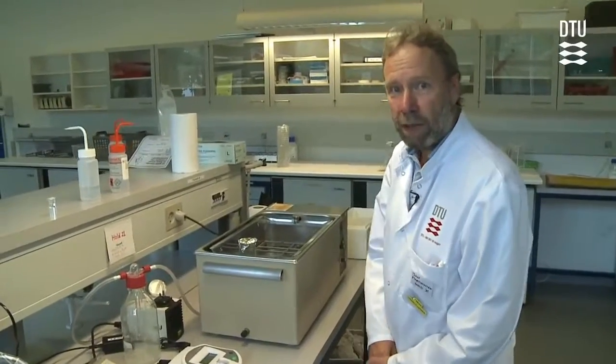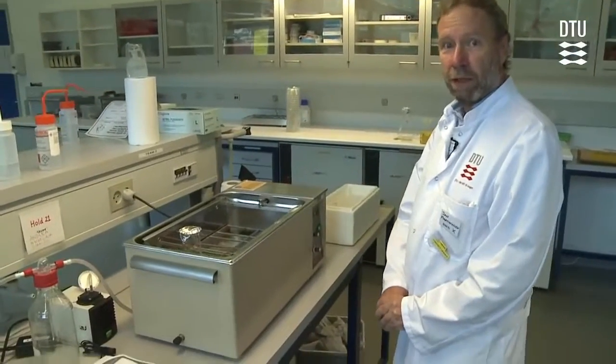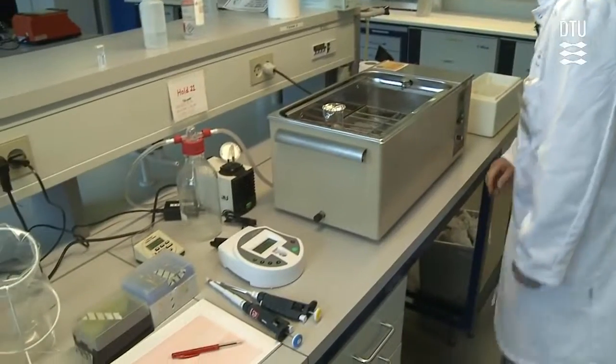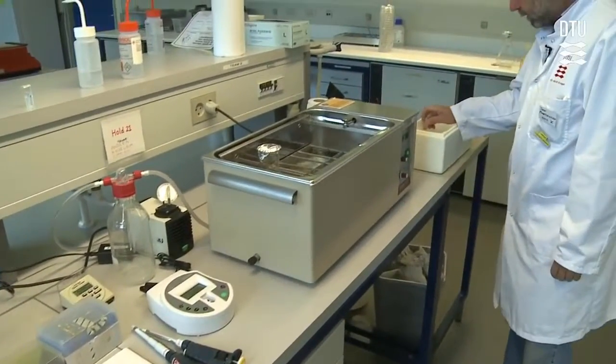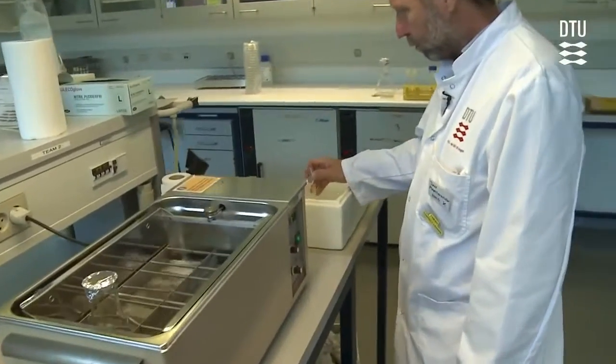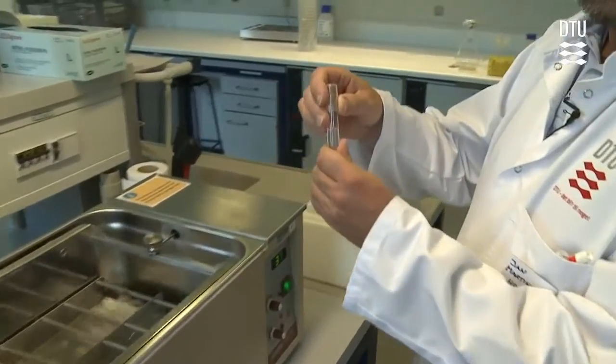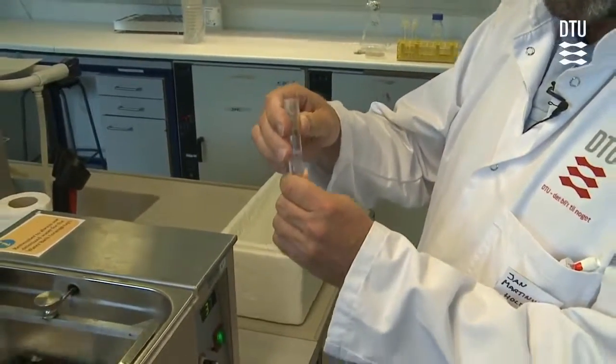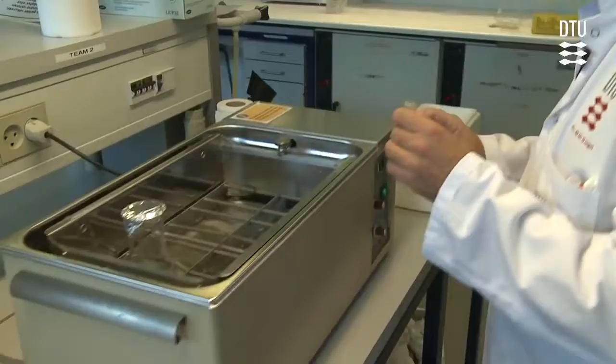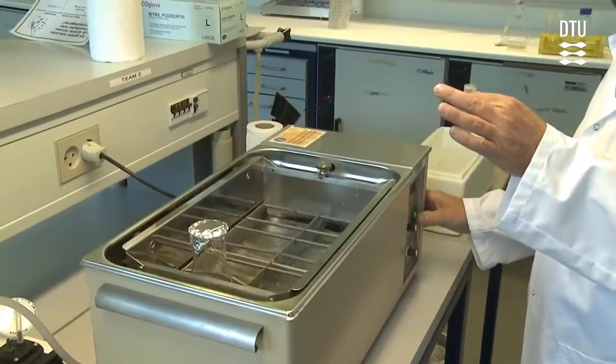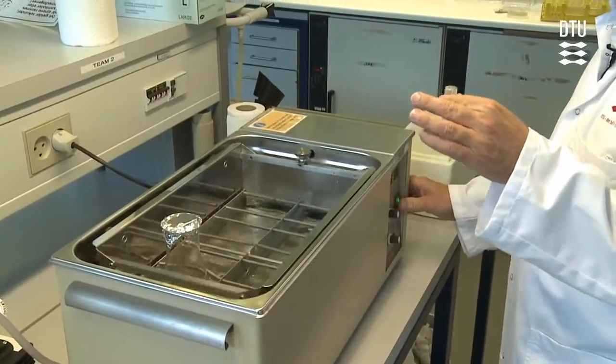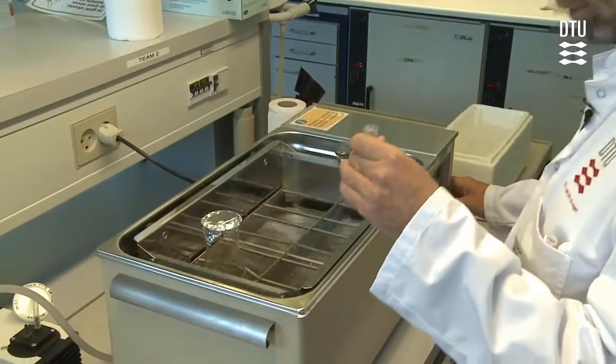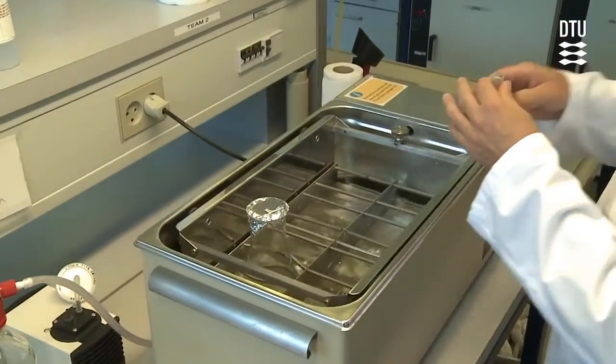Now it's time to start the experiment where we want to enrich the medium for arginine requiring mutants. On ice we have an exponentially growing culture that was growing in a medium without arginine. We add the entire content of the tube into the medium in the water bath.